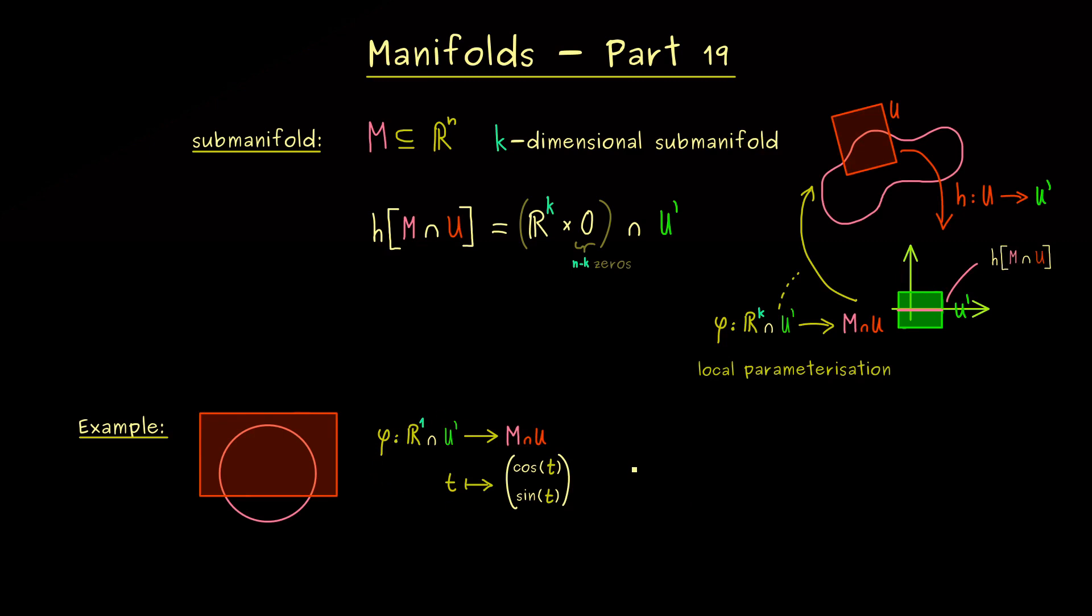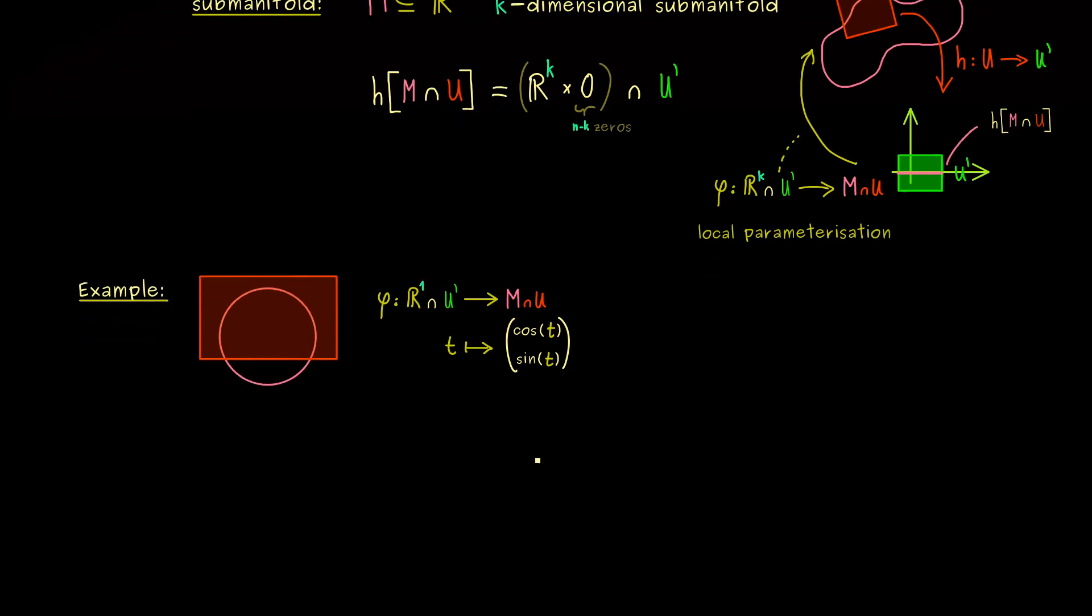And since we have started with smooth manifolds, the resulting parameterization here is also a differentiable map. And it's not too abstract at all, because it's a map from R^k into R^n. So we have derivatives and everything, like we have learned it in multivariable calculus. And this now makes it possible to define this important tangent space.